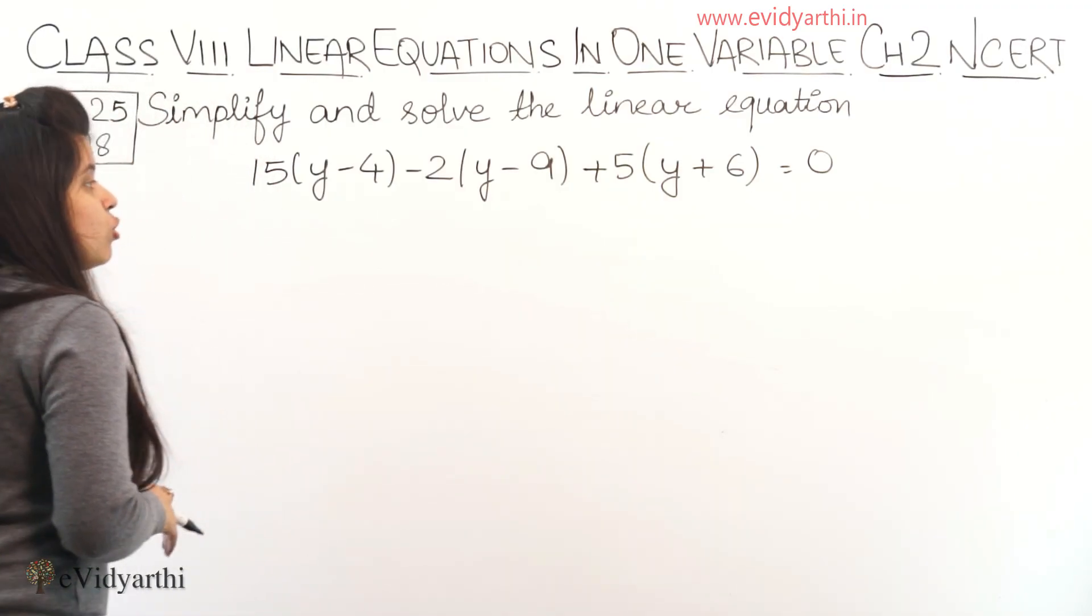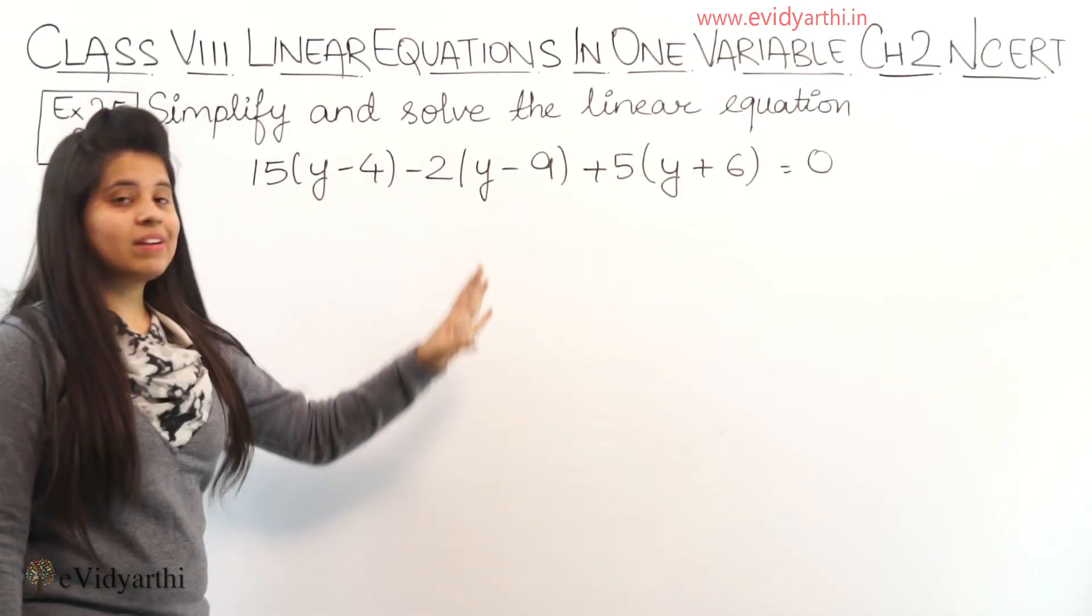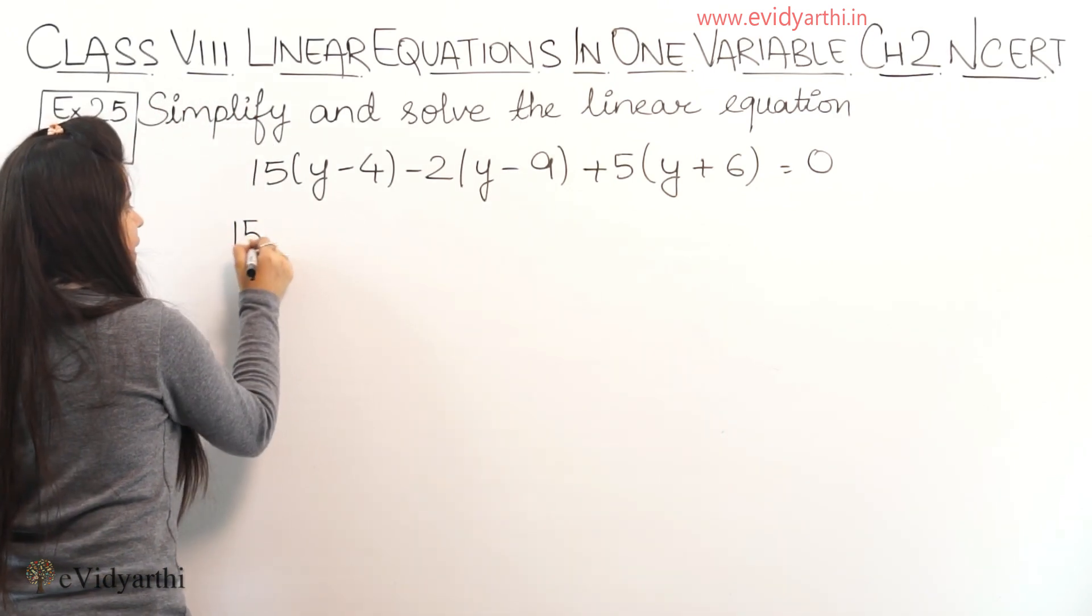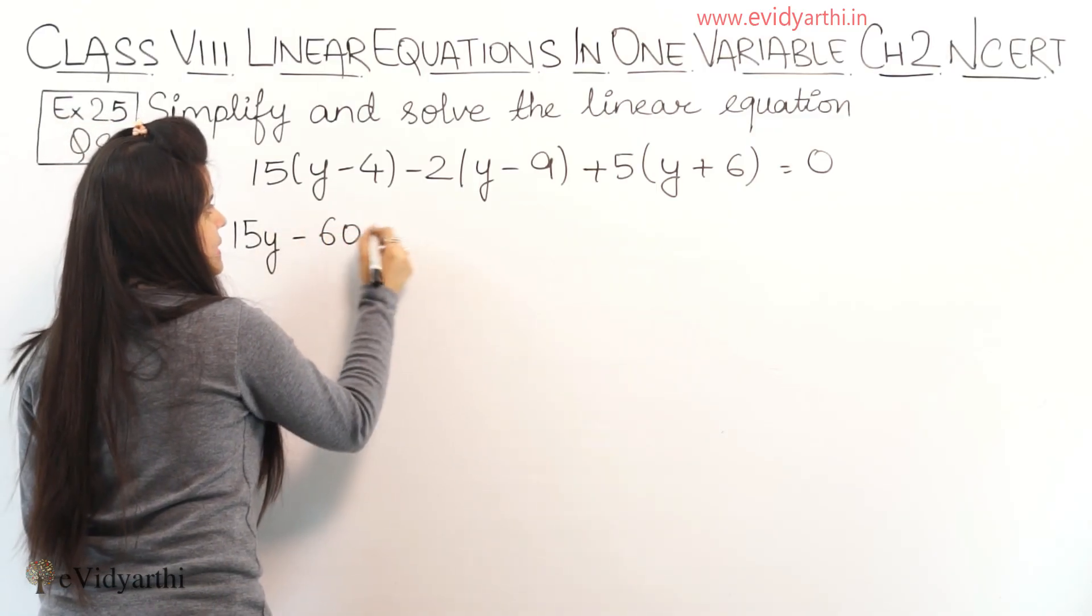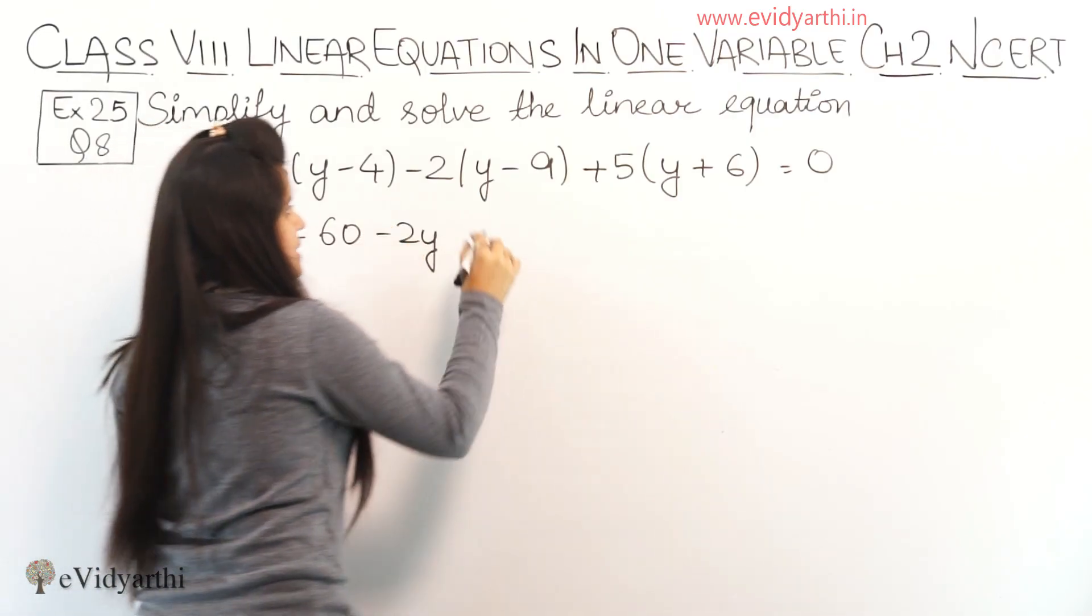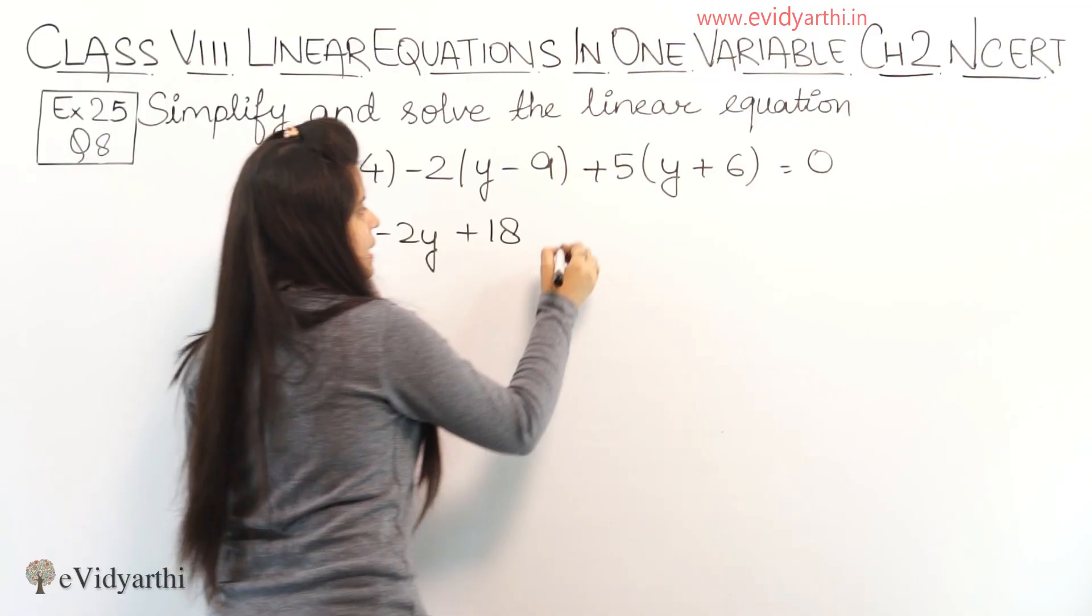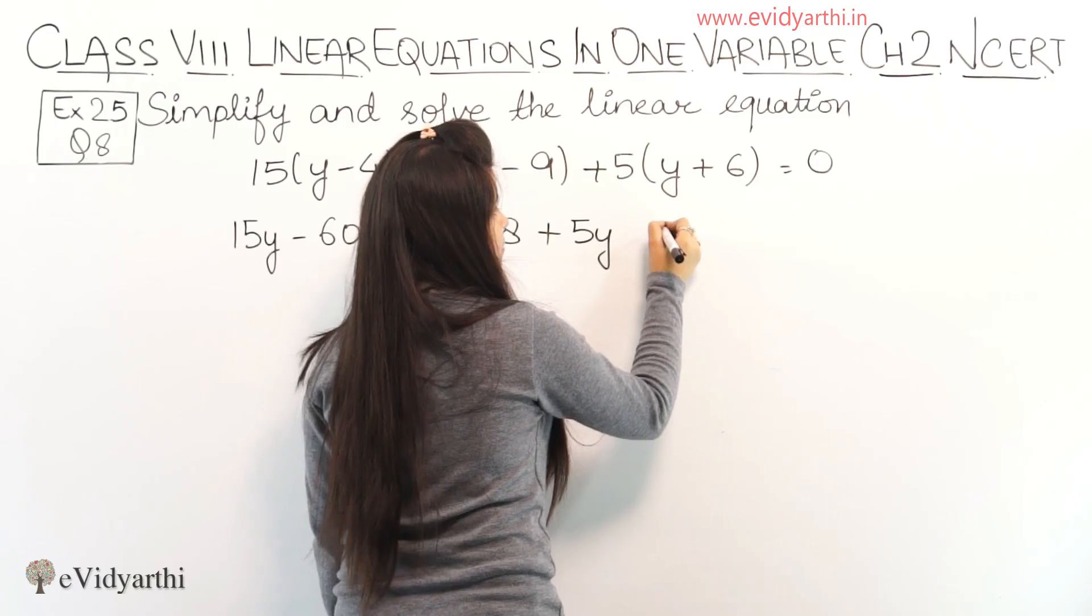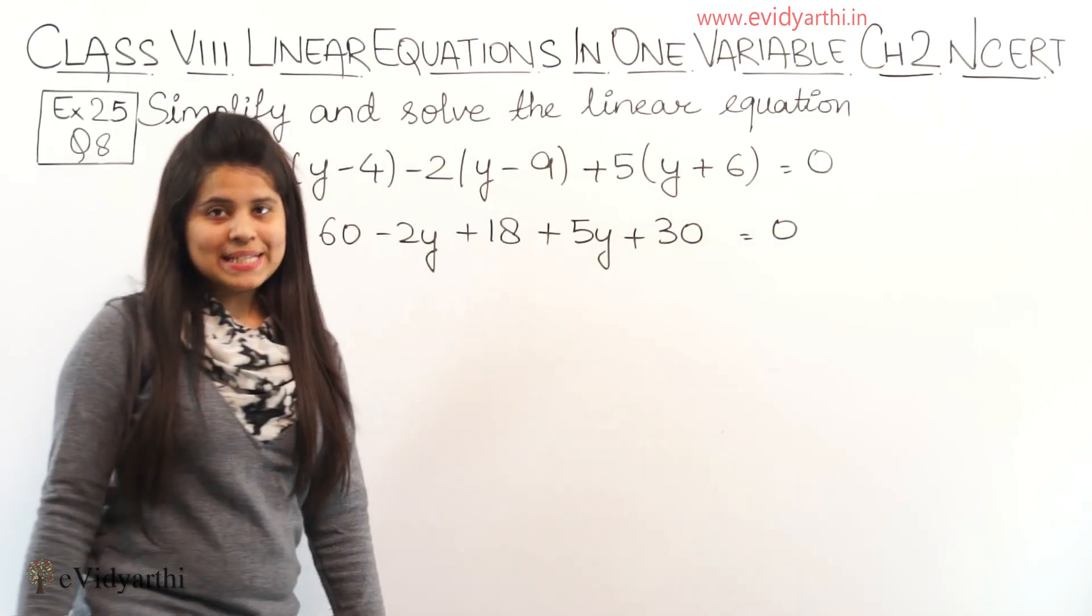So we will solve this equation. First we have to solve the brackets. The numbers in the brackets are multiplied by the outer numbers. So 15 into y minus 15 into 4 is 60. 2 into y, minus, plus minus. Then 2 into 9 is 18, minus minus plus. Then 5 into y is 5y, plus plus plus. Then 5 into 6 is 30 again plus, and equals to 0.